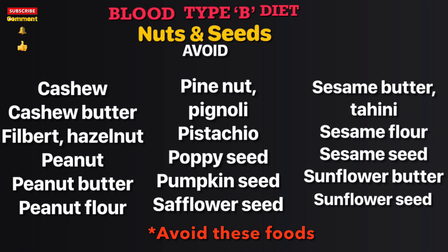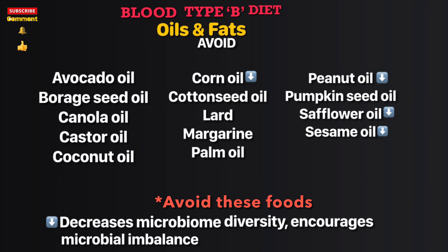More nuts and seeds to avoid: peanut, peanut butter, peanut flour, pine nut (pignoli), pistachio, poppy seed, pumpkin seed, safflower seed, sesame butter (tahini), sesame flour, sesame seed, sunflower butter, and sunflower seed. Oils and fats to avoid: avocado oil, borage seed oil, canola oil, castor oil, coconut oil, corn oil, cottonseed oil, lard, margarine, palm oil, peanut oil, pumpkin seed oil, safflower oil, and sesame oil.